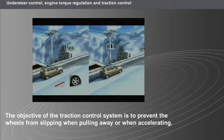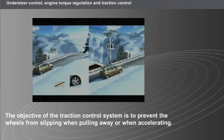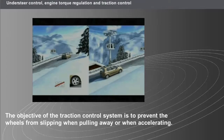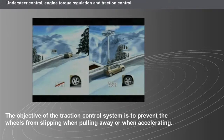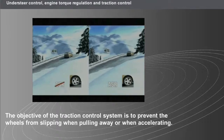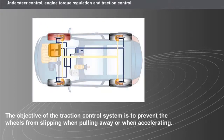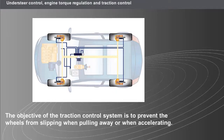The traction control system is an additional function of the electronic stability program. Its objective is to prevent the wheels from slipping when pulling away or when accelerating. Depending on the conditions of grip, the traction control system intervenes to reduce engine torque and to apply braking to the wheel that is slipping. The computer uses information from the wheel speed sensors and controls the activation of the pump and its solenoids for the wheel concerned. The traction control function is operational whatever speed the vehicle is travelling.